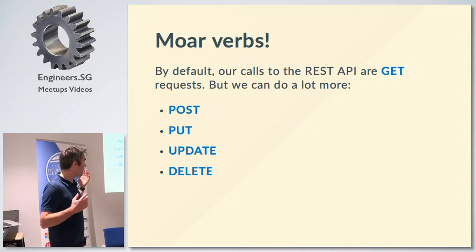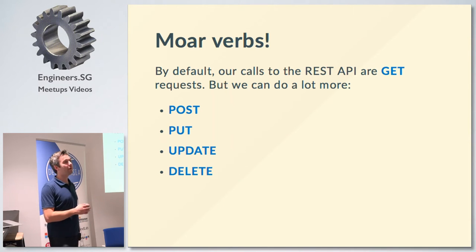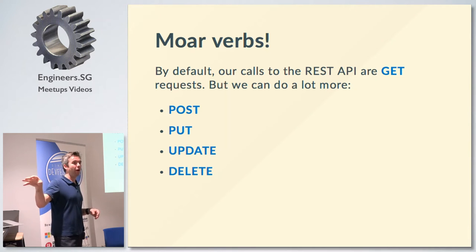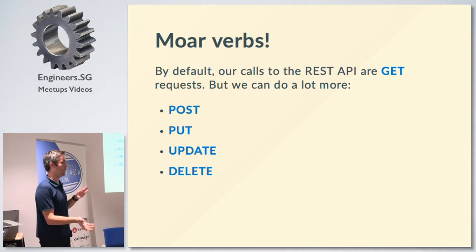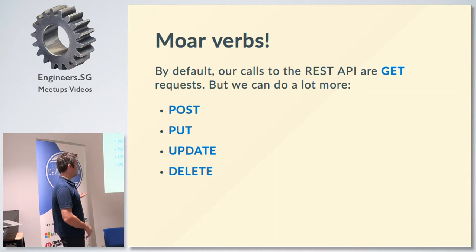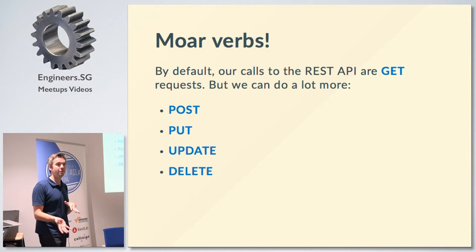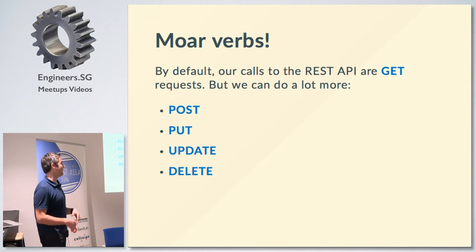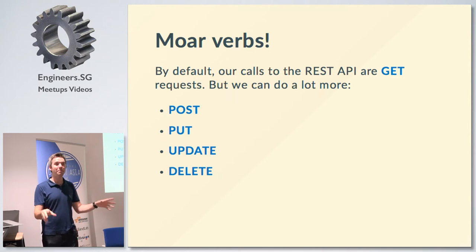Everything shown so far you could theoretically do with RSS — getting stuff out is already theoretically available that way. But there are other types of requests: POST, PUT, UPDATE, DELETE. By default a browser does a GET request, which is what returns that JSON. This is how you'd process a form — you can post things to the REST API. You might wonder: is this dangerous? Can people just add or delete posts on my website? No, because there are two layers — things that are publicly available, and authentication.